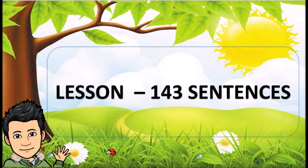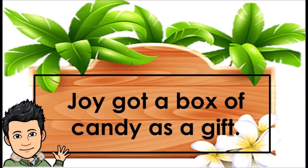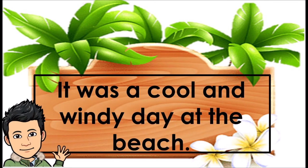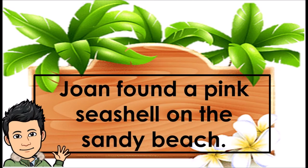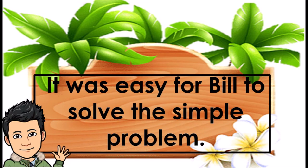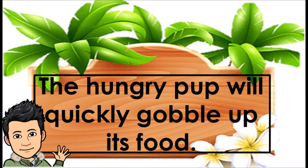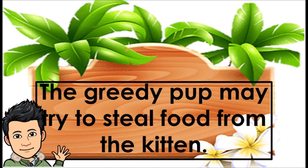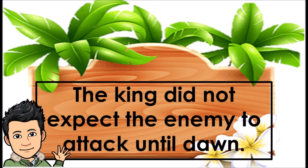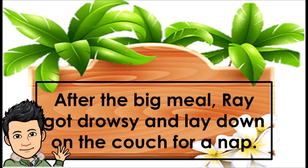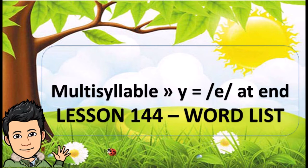Lesson 143, Sentences. Joy got a box of candy as a gift. It was a cool and windy day at the beach. Joan found a pink seashell on the sandy beach. It was easy for Bill to solve the simple problem. The hungry pup will quickly gobble up its food. The greedy pup may try to steal food from the kitten. The king did not expect the enemy to attack until dawn. After the big meal, Ray got drowsy and lay down on the couch for a nap.